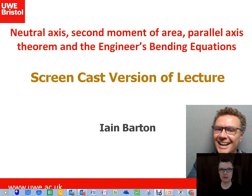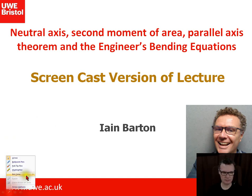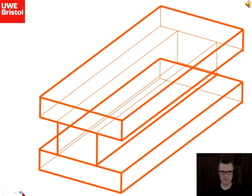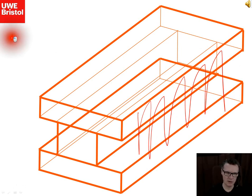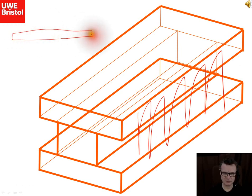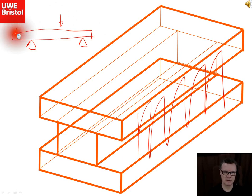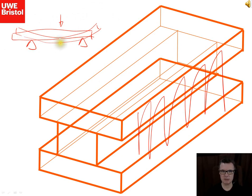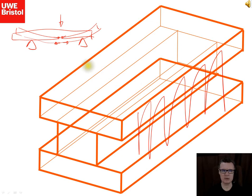Hello, this is lecture 8, dealing with the neutral axis, second moment of area, parallel axis theorem, and the engineer's bending equations. So far we've looked at the beam from the side, where we imagine we've got a beam, put it in some pivots, and loaded it. That load is going to cause bending, which will cause tensile stress at the bottom and compressive stress at the top. This lecture is about working out what that maximum stress is.